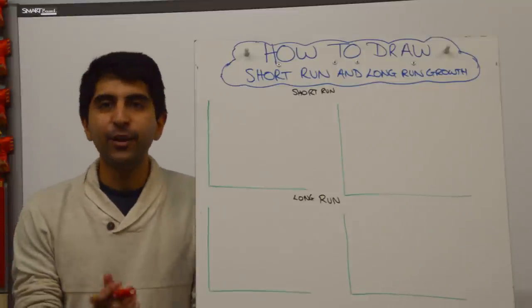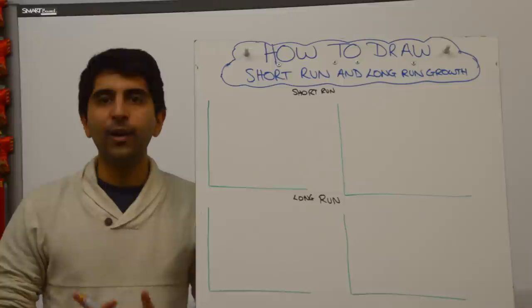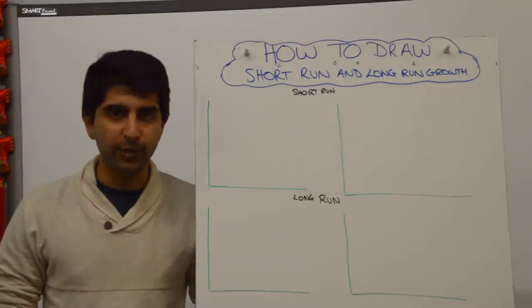Hi everybody! We need to show short run and long run growth on diagrams. How can we do that?